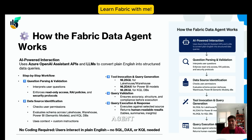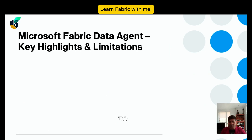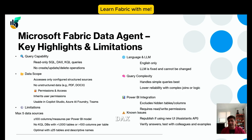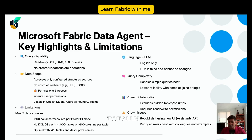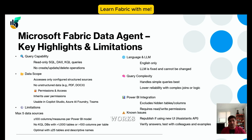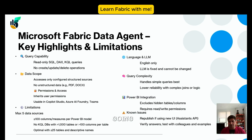There are certain limitations to be aware of. Data Agents only read DAX and SQL queries — they cannot write, update, or create any visuals like Power BI Q&A can. They cannot process PDF files or complex unstructured data. Only certain data structures are supported: warehouse, semantic model, and KQL databases. A maximum of five data sources can be connected at a time, and any data tables with more than 100 columns will not work — only optimal tables with fewer than 25 columns and descriptive names are supported.